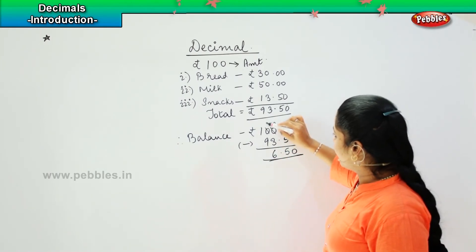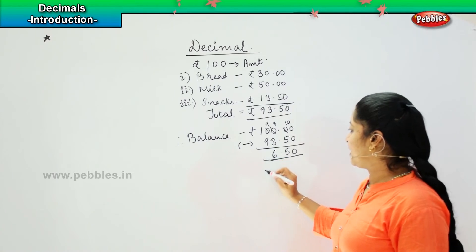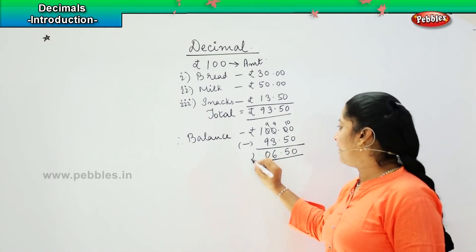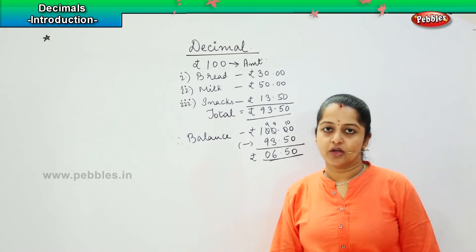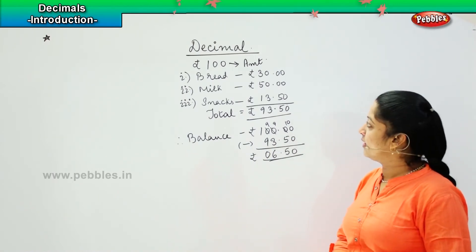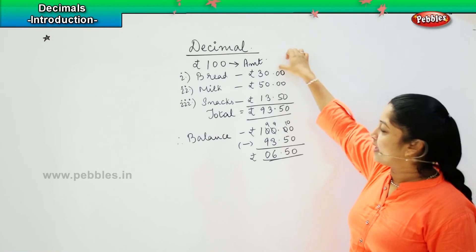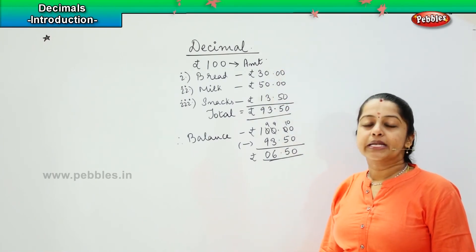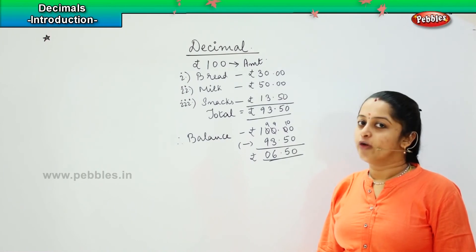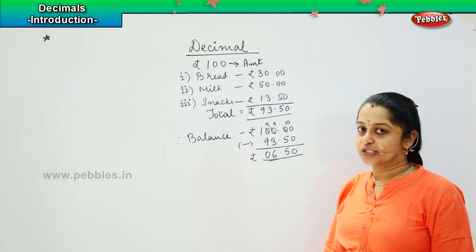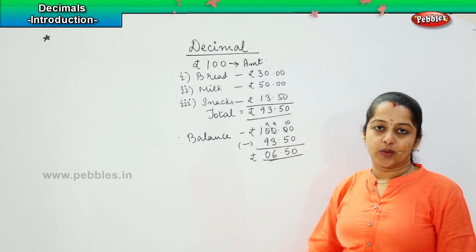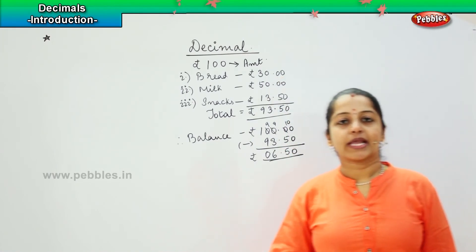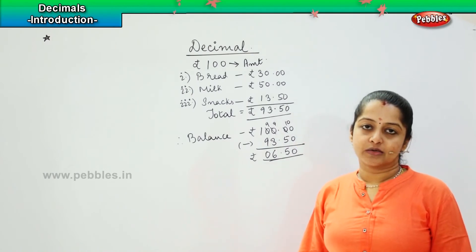Then nine minus three is six. So I have a balance of six rupee and fifty paise, which I will be giving to my mother. So what did you understand here, children? Why did I put here point and zero zero? This point shows the decimal value. Decimal can be represented in the combination of a whole number, fraction, and the point value. This is how we do a calculation when it comes in terms of money.